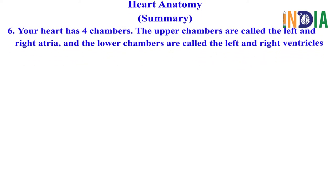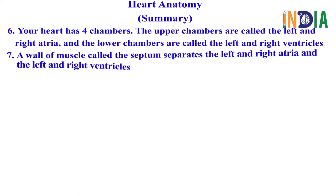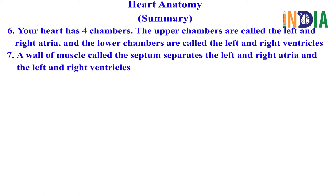Your heart has four chambers. The upper chambers are called the left and right atria, and the lower chambers are called the left and right ventricles. A wall of muscle called the septum separates the left and right atria and the left and right ventricles.